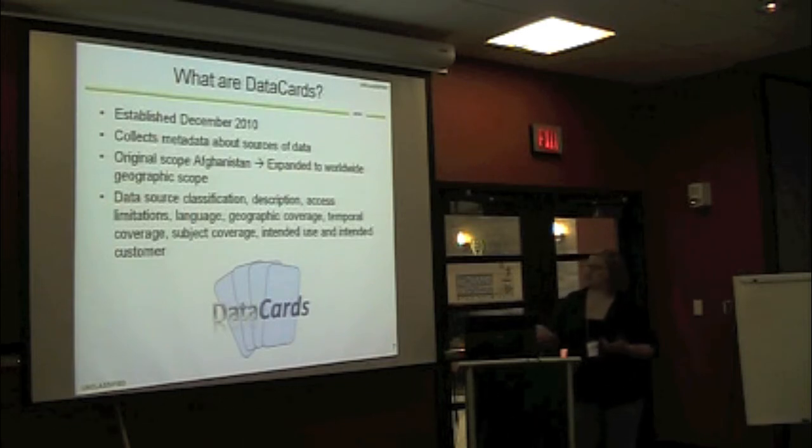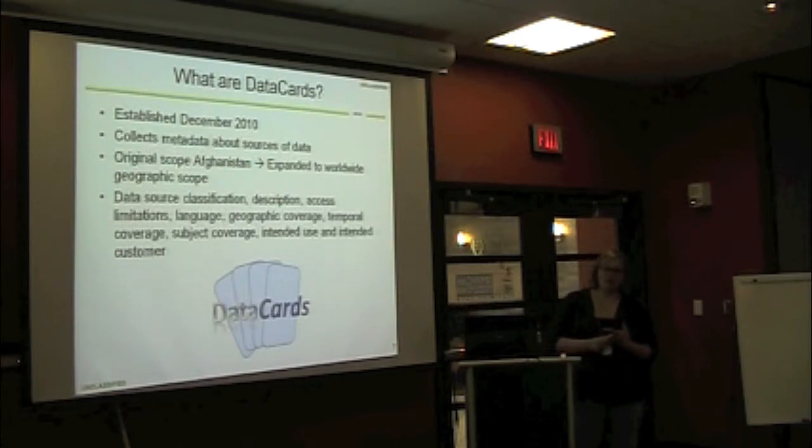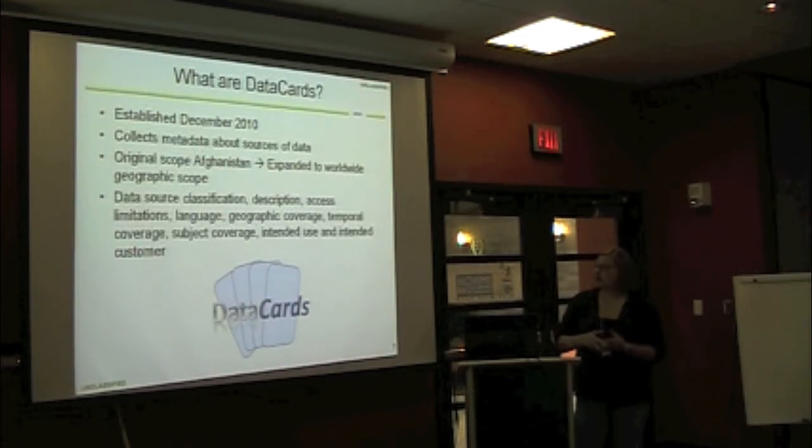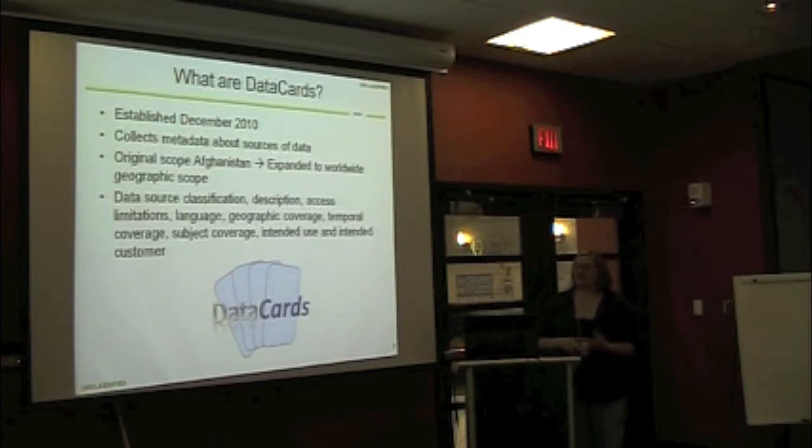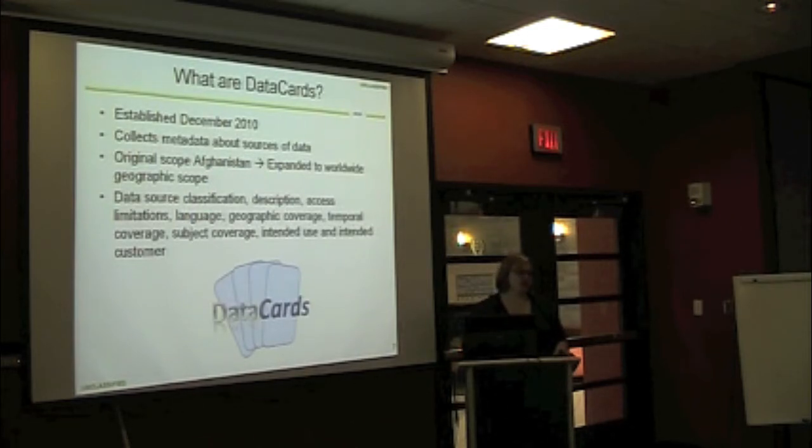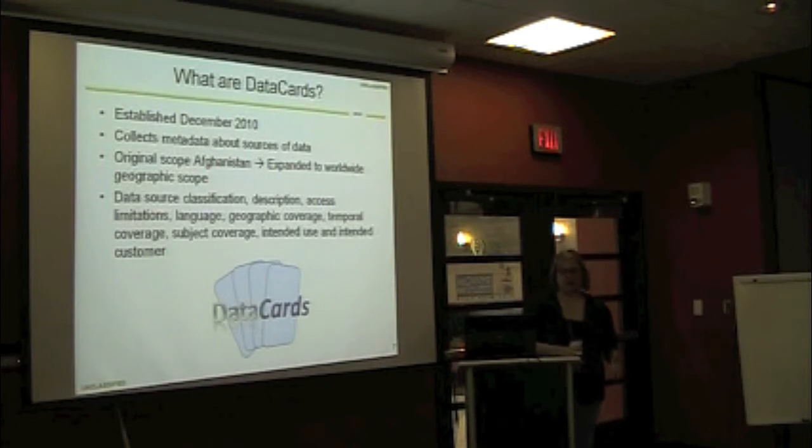Some of the fields that we collect are pretty standard: the classification of the data source, description, and if there's any access limitations, like if it's proprietary or secret, the language that the data source is in, like English, German, Dari, Farsi. The geographic coverage, temporal coverage, subject coverage, intended use, and intended customer. So you can see some of these metadata fields are a little bit more useful than others. Like the intended use may not always be the best use of that data source.